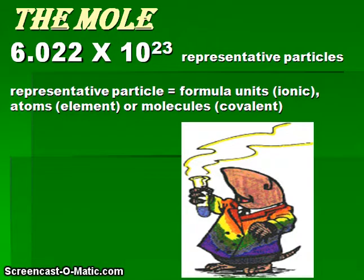For example, ionic compounds, the representative particle is a formula unit. For elements, we are talking about atoms as the representative particles. And for covalently bonded substances, we are talking about molecules.